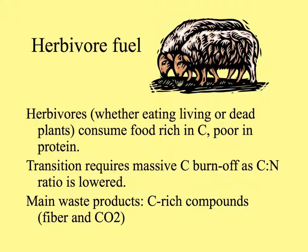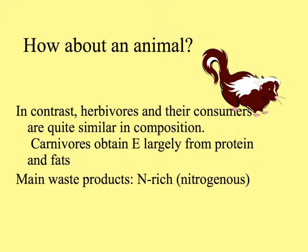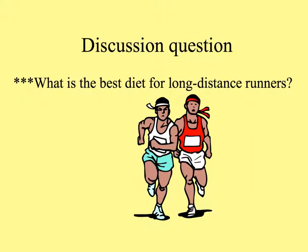Because of this, the main waste products of herbivores are very heavy in carbon — they excrete fiber and carbon dioxide. In contrast, carnivores obtain their energy mostly from eating protein and fats, and because of this, their main waste products are rich in nitrogen.